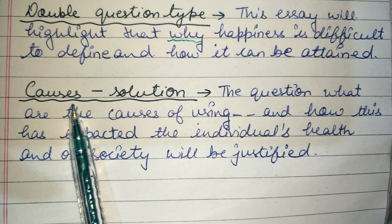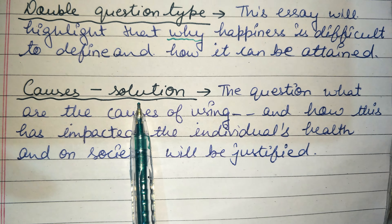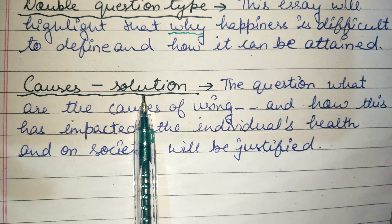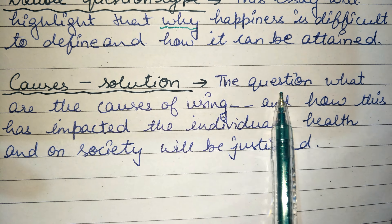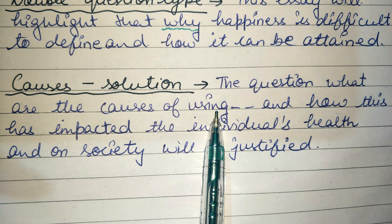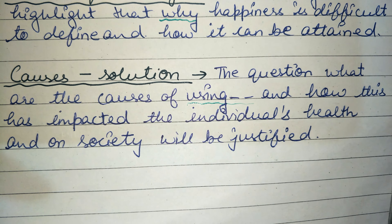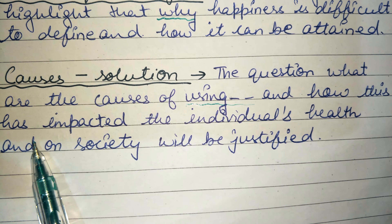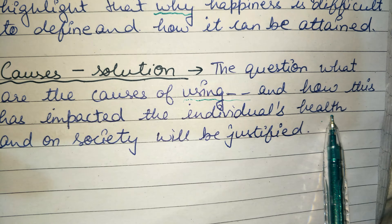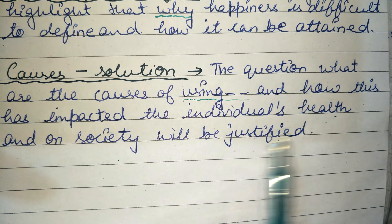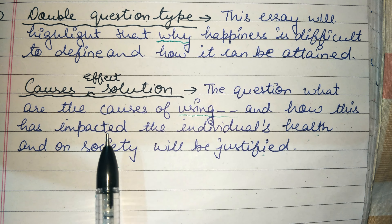For causes and solutions, suppose the question is: 'Pollution is increasing at an alarming rate. What are the causes and what are the solutions?' The thesis line would be: 'The question of what are the causes of pollution and how this has impacted individuals' health and society will be justified.' This is used when the question asks about effects.